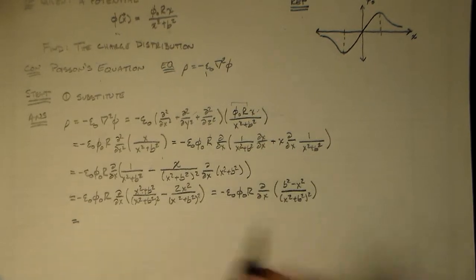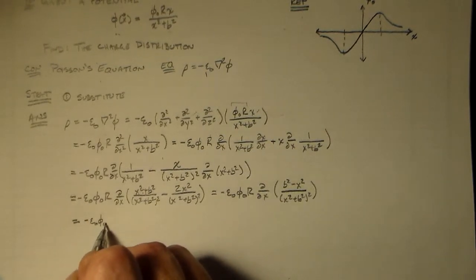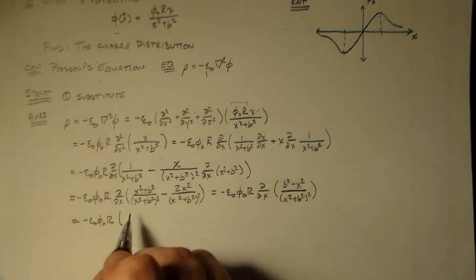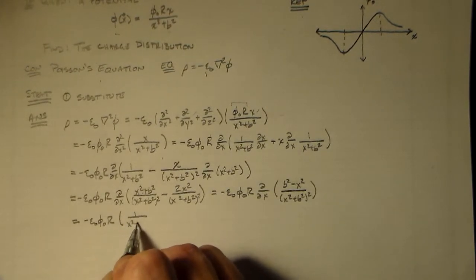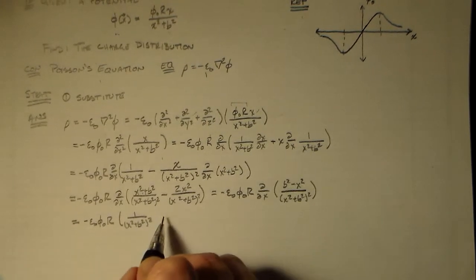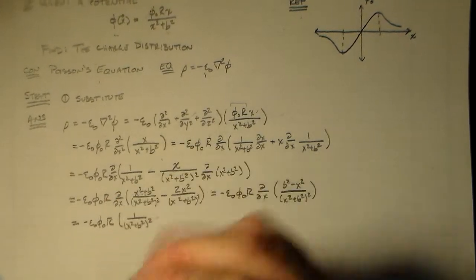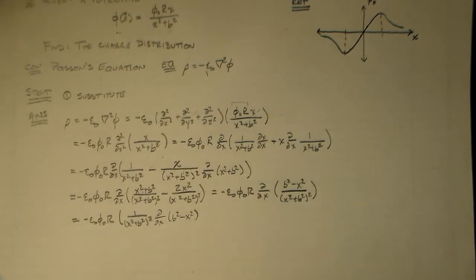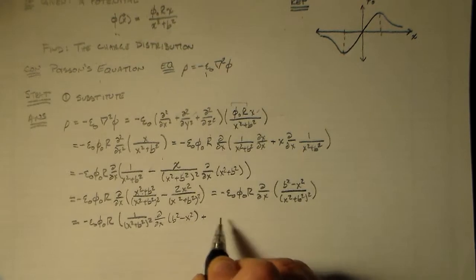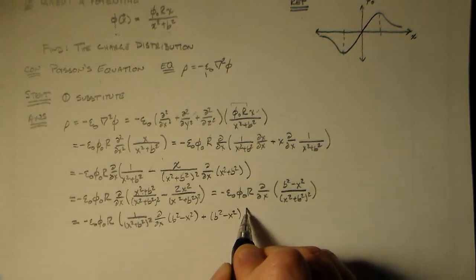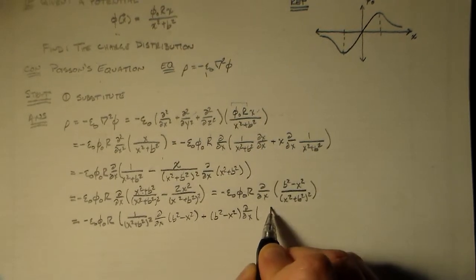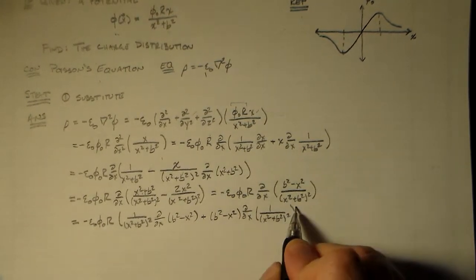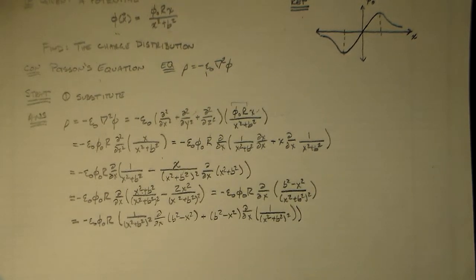So that's minus epsilon naught phi naught r, d dx, b squared minus x squared over x squared plus b squared squared. So where do we end up with now? We have minus epsilon naught phi naught r, and again product rule. So 1 over x squared plus b squared squared times d dx of b squared minus x squared, plus b squared minus x squared times d dx of 1 over x squared plus b squared squared.